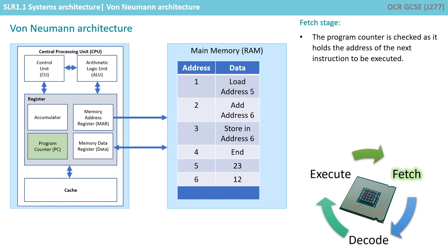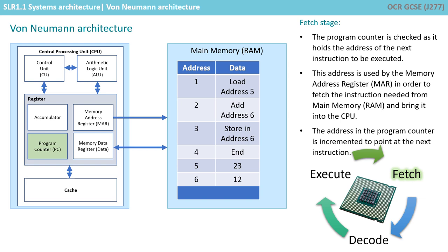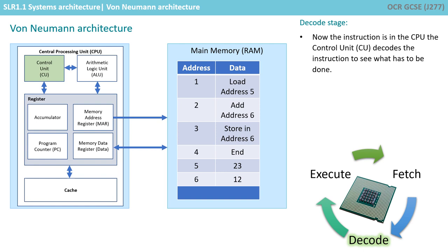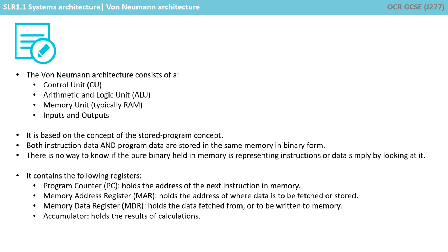Let's look at a typical fetch-execute cycle in a little more detail. We start with the fetch stage. The program counter is checked as it holds the address of the next instruction to be executed. This address is used by the memory address register in order to fetch the instruction needed from main memory and bring it back into the memory data register. The address in the program counter is incremented to point to the next instruction. Now the instruction is in the CPU, the control unit decodes the instruction to see what has to be done. We can then execute the instruction — we could fetch data from main memory and add it to the accumulator, jump to another instruction, or write data held in the accumulator back into RAM.